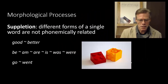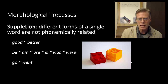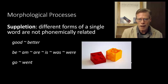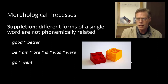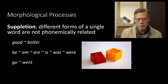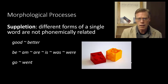An even further process is suppletion, where there's no phonemic relation between the two forms. For example, 'good' and 'better' — there's no sound-change alternation; they're completely different sound sequences. Yet we intuitively sense they are different forms of the same word. The same applies to the inflections of 'be,' which becomes 'am,' 'are,' 'is,' 'was,' 'were.' And likewise 'go' versus 'went' — same word, different tenses, but clearly not phonologically or phonemically related.